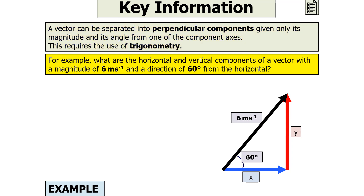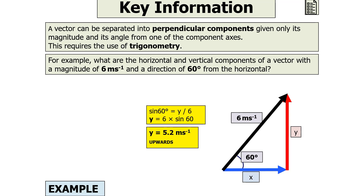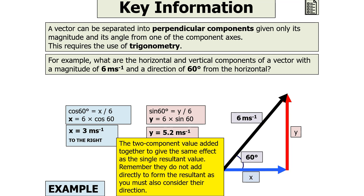A vector can be separated into perpendicular components given only its magnitude and its angle from one of the component axes, but this requires the use of trigonometry. For example, what are the horizontal and vertical components of a vector with a magnitude of 6 metres per second squared and a direction of 60 degrees from the horizontal? The horizontal component Fx equals 6 cos 60, which is 3 metres per second to the right. The vertical component Fy equals 6 sin 60, which is 4.2 metres per second upwards. The two component values added together give the same effect as the single resultant value.